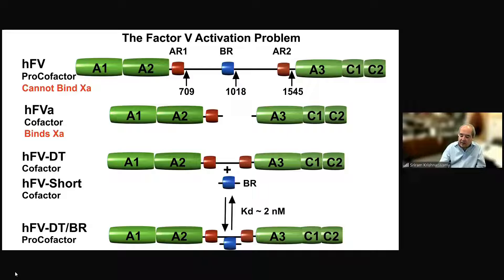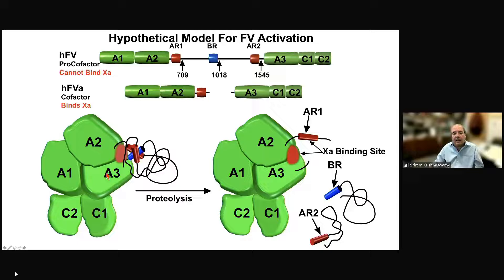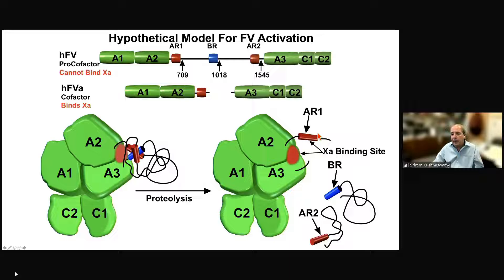The idea we proposed, based on a variety of structures and also a cryo-EM structure of 5a bound to 10a, was that these regions — acidic region 1, basic region, and acidic region 2 — widely separated in space could come together to form a tripartite motif that also occludes 10a binding sites, making the procofactor inactive. Proteolysis releases the acidic region 2 and basic region containing polypeptides, opening up two important regions for 10a binding and allowing expression of cofactor activity. This is now supported by a variety of structural elements.